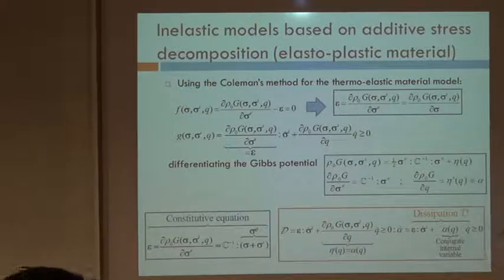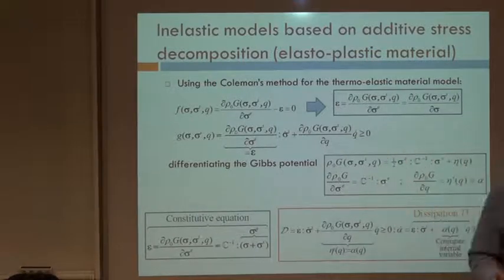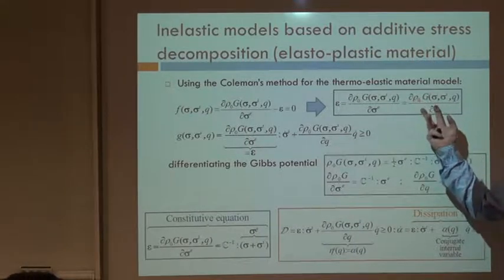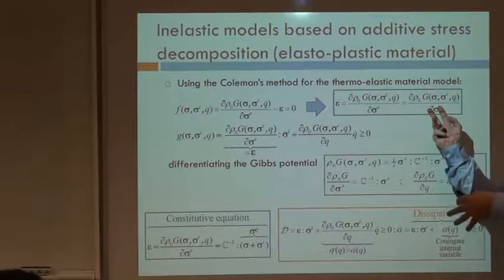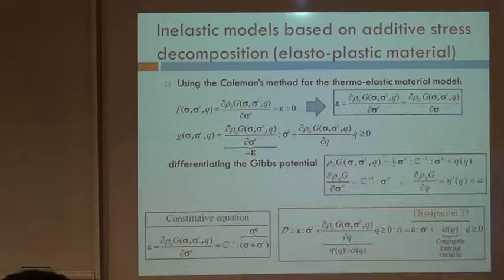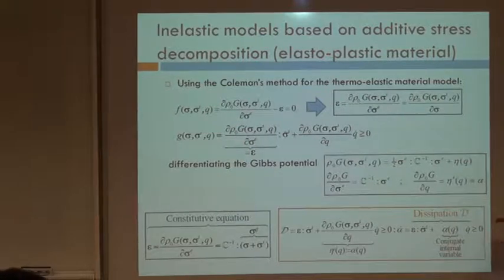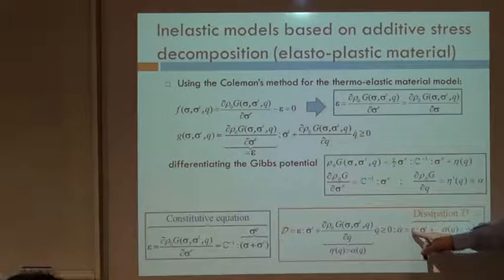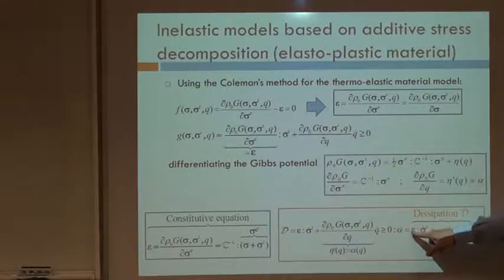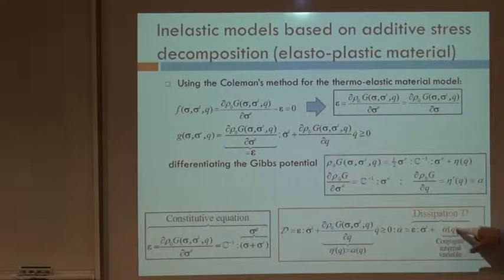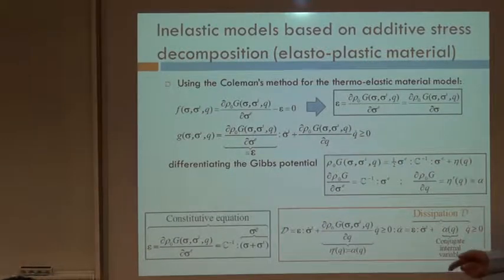A lot of mathematics, fully rigorous, but the conclusion is very simple. A constitutive model essentially is the derivation of a potential with respect to the stresses if working in a stress-driven model, or with respect to the strains if working in a strain-driven model. What remains is the dissipation — the dissipation is always the product of the stresses times the internal variable rates. Here it's the stress times the inelastic stresses plus the strain-like variable, which is the derivative of that, called the conjugate internal variable, times Q dot.